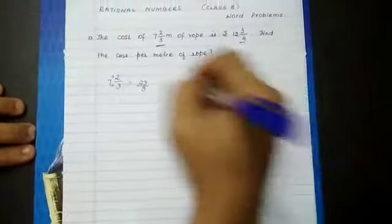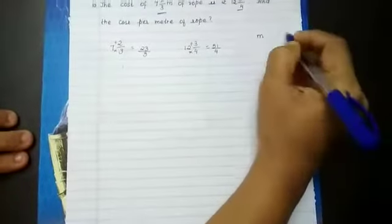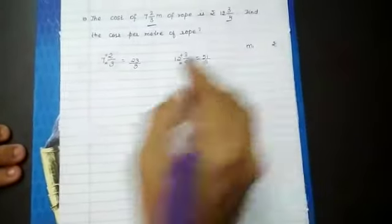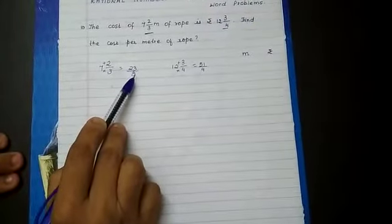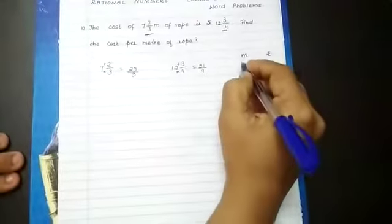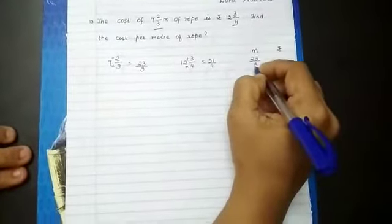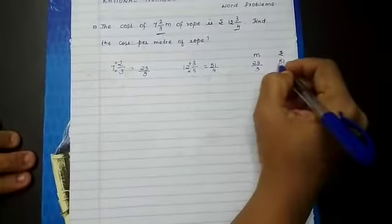So now let us put this information in a box. Meter and rupees information is given. That means 23 by 3 meters cost us this much. So 23 by 3 meters cost us 51 by 4 rupees.